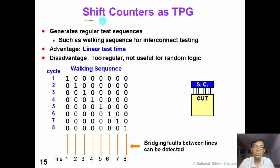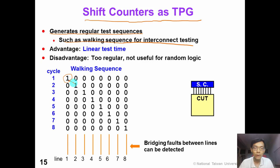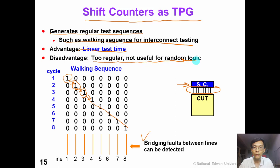We can also use shift counters as a test pattern generator. A shift counter can generate regular test sequences such as a walking sequence to test wires or interconnects. This figure shows a very simple walking sequence generated by a shift counter — every cycle, this one is shifted to the right by one bit. So after eight cycles, we can walk across each line to detect bridging faults between lines. Using this shift counter as TPG, we can easily test interconnect wires in linear time. However, this structure is too regular and is not useful for random logic.